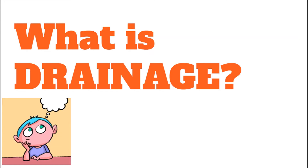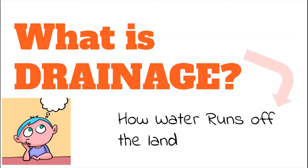In river systems, drainage refers to how water runs off the land. This would include streams or tributaries running from different directions to join or to form a main river, which later flows into a larger water body, such as a lake or the ocean.